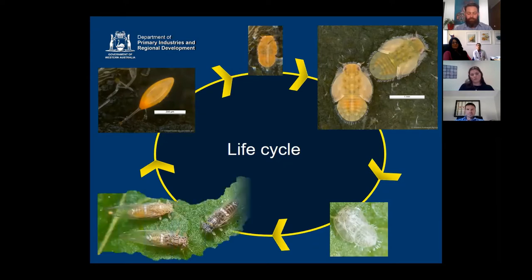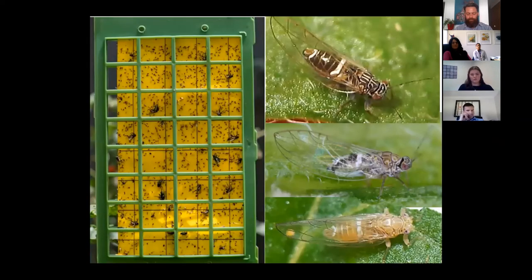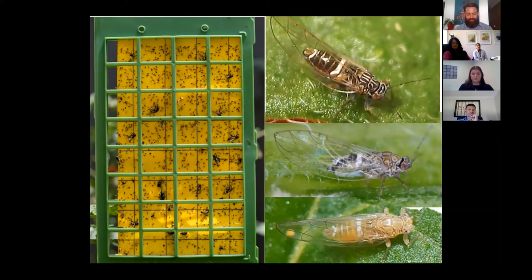Finally we get to the adult stage. The adult stage has wings, so they fly around to different plants. We use sticky traps in our surveillance for TPP, and they catch the adults. This sticky trap on the left-hand side is covered in TPP. It's very hard, though, to tell TPP apart from other insects, particularly aphids and other psyllids. On the right-hand side we have a series of adult photos from a typical dark chocolate brown one on top with white stripes, through to a yellow adult at the bottom.